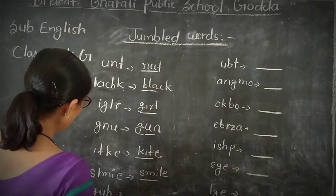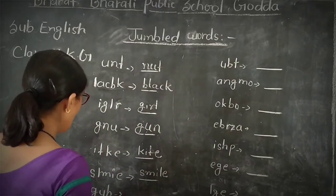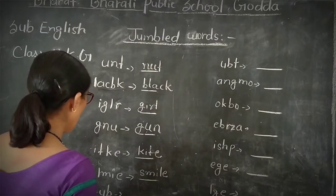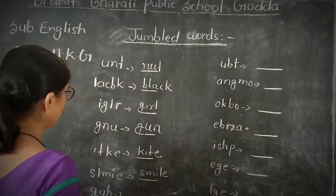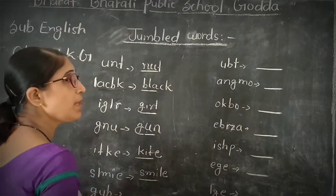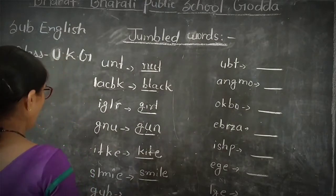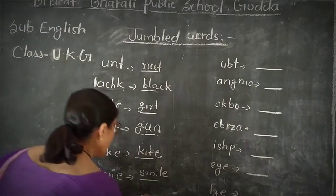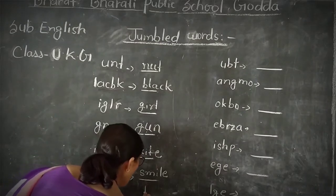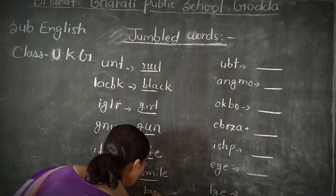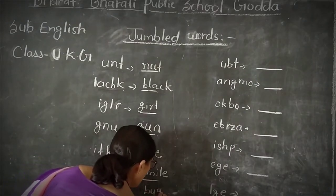Will write. G, U, B. The correct word is B, U, G — BUG. Verb.